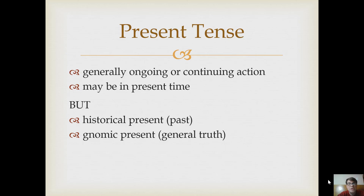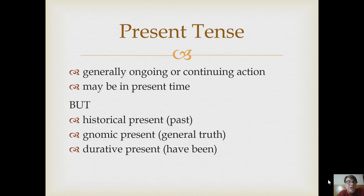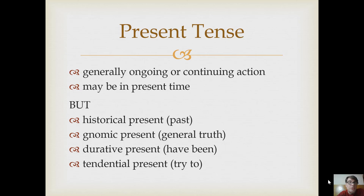There are gnomic presents — statements of general truths. 'Roses are red, violets are blue.' I'm not describing something happening right now; there are no roses in this room. Proverbs might use a present tense this way. There's even a durative present — 'I've been serving you now for six years' — which could be a present tense in Greek but needs to be translated differently in English. There's a tendential present where you try to do something and you can add the words 'try to' in translation.